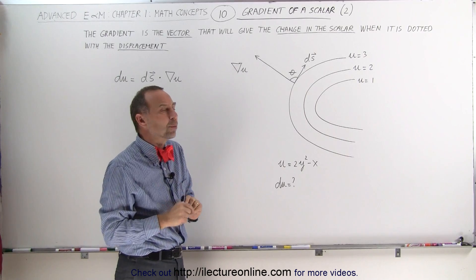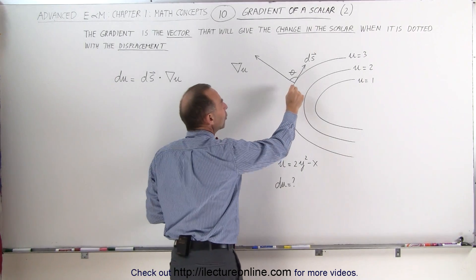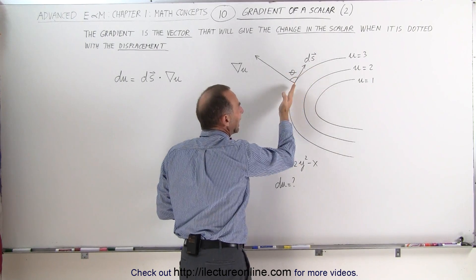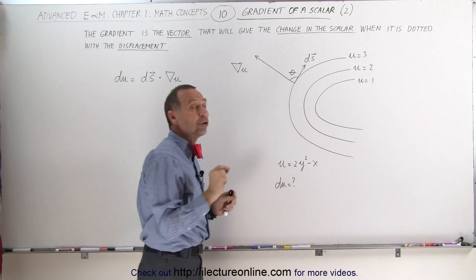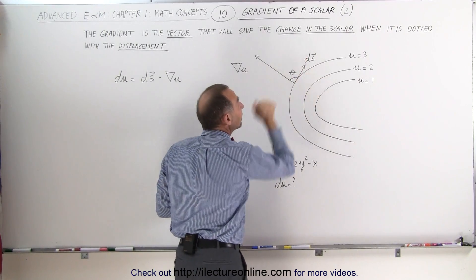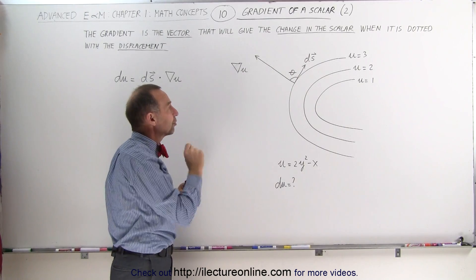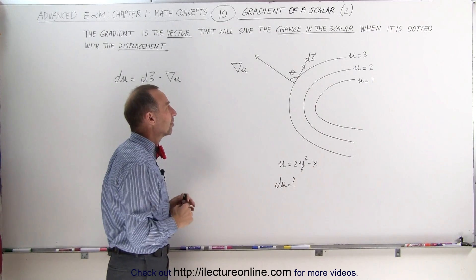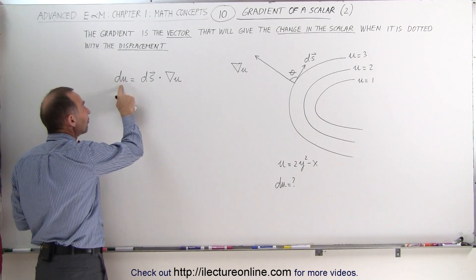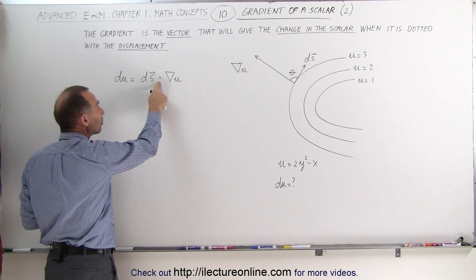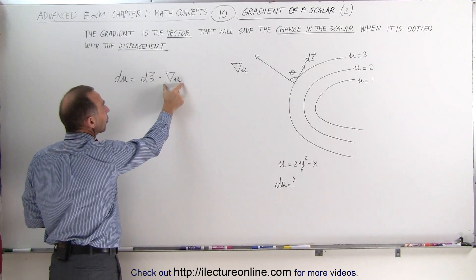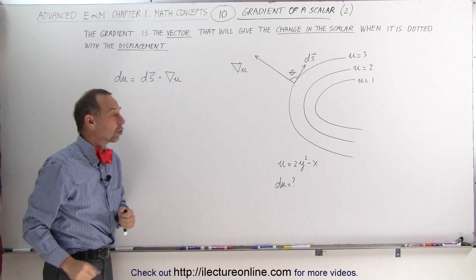Now what we're going to do is assume that we make a small change in the location. We're going to draw a small vector ds at this particular location, and we want to know how much the scalar quantity will change as we move in that direction a very small amount — small ds. It turns out that, by definition, the change in the scalar function can be defined as the dot product, or scalar product, between the displacement vector and the gradient of the scalar quantity.